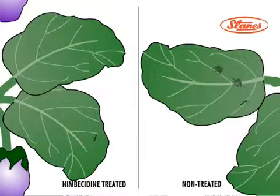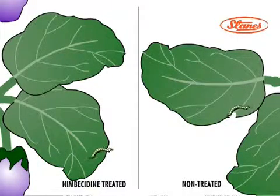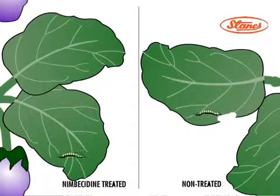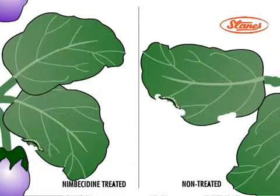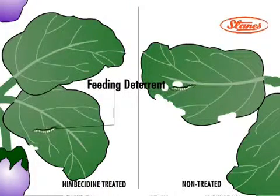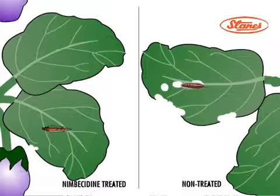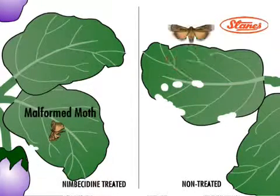But in untreated leaves, the moth of the pest lays or deposits the eggs in a natural way, and these deposited eggs become neonates or larvae. When neonates are formed, they can attack the non-treated leaves very effectively and destroy the lamina very fast, whereas Nimbusidin prevents this.